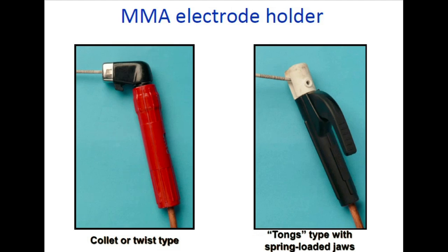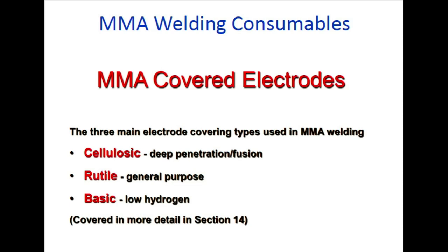MMA electrode holders are of two types: collect or twist type, and tongs type with spring-loaded mechanism. These are the types of MMA electrode holders used. The MMA welding content will continue in the next video.